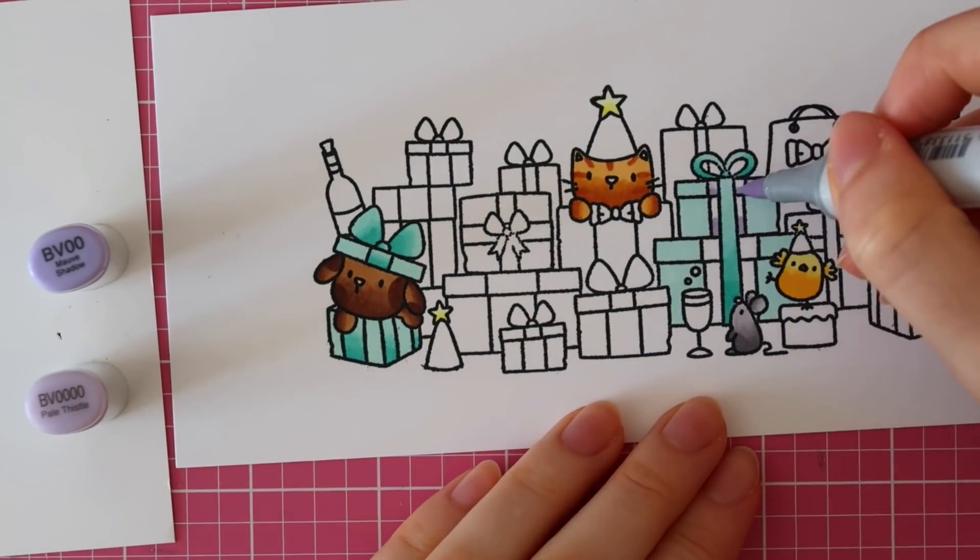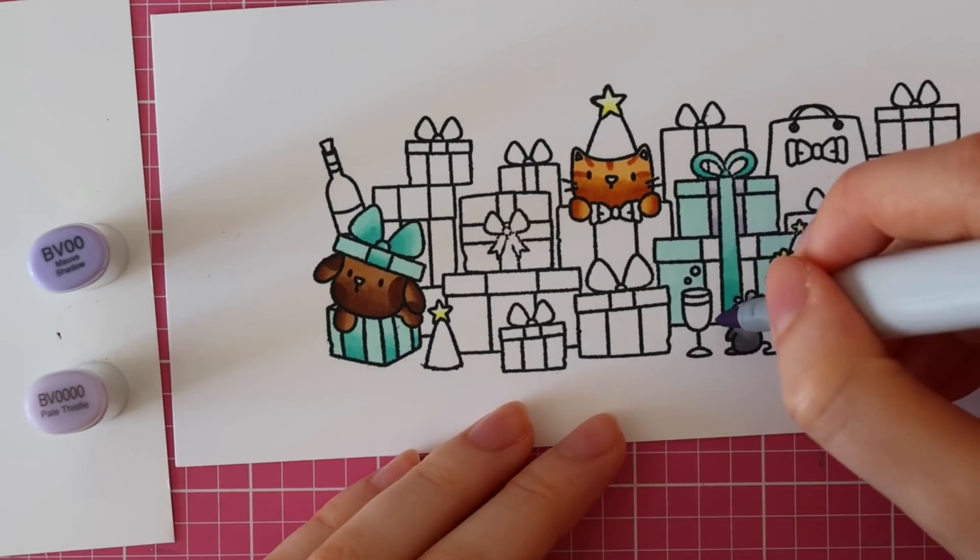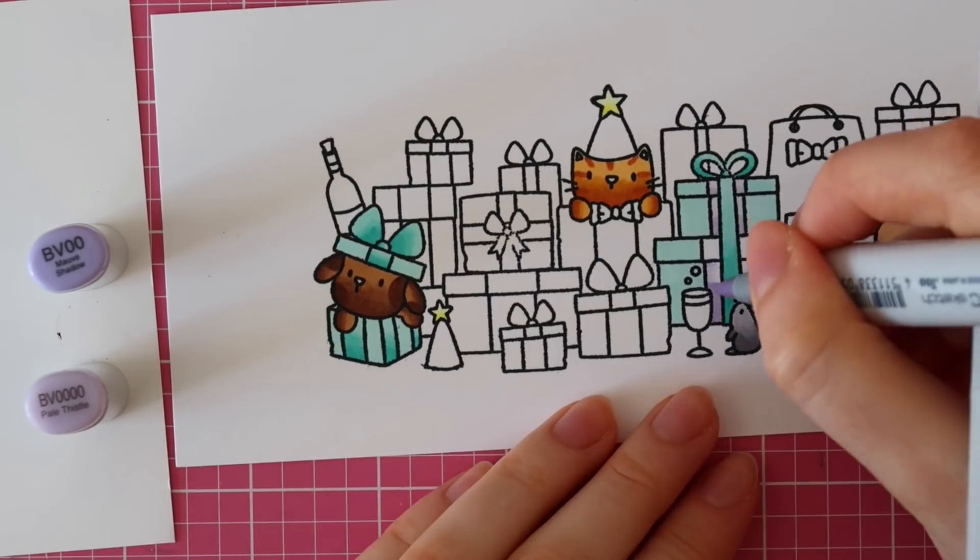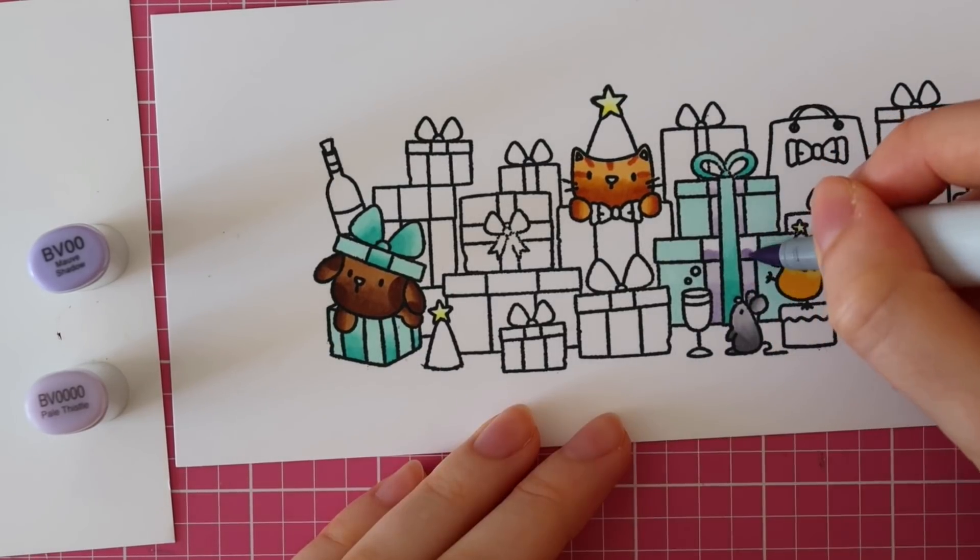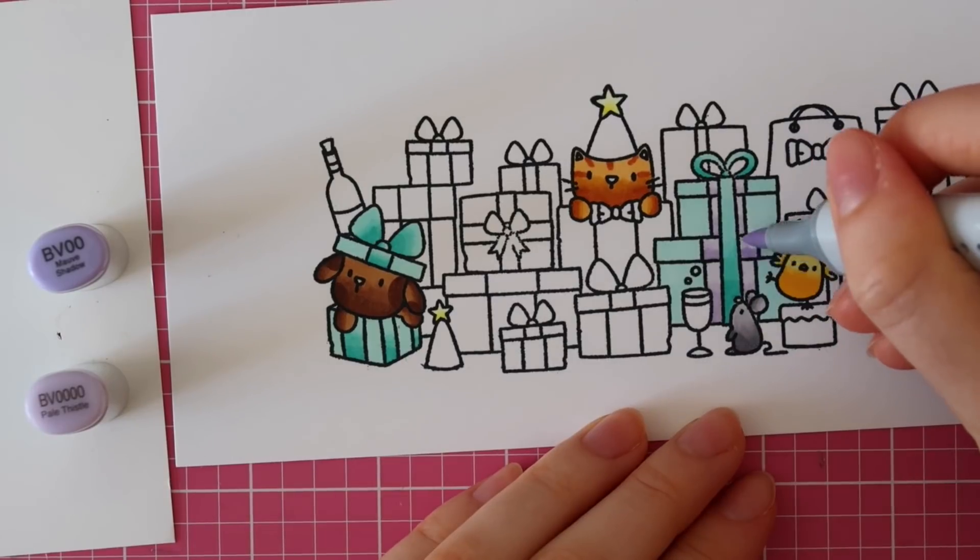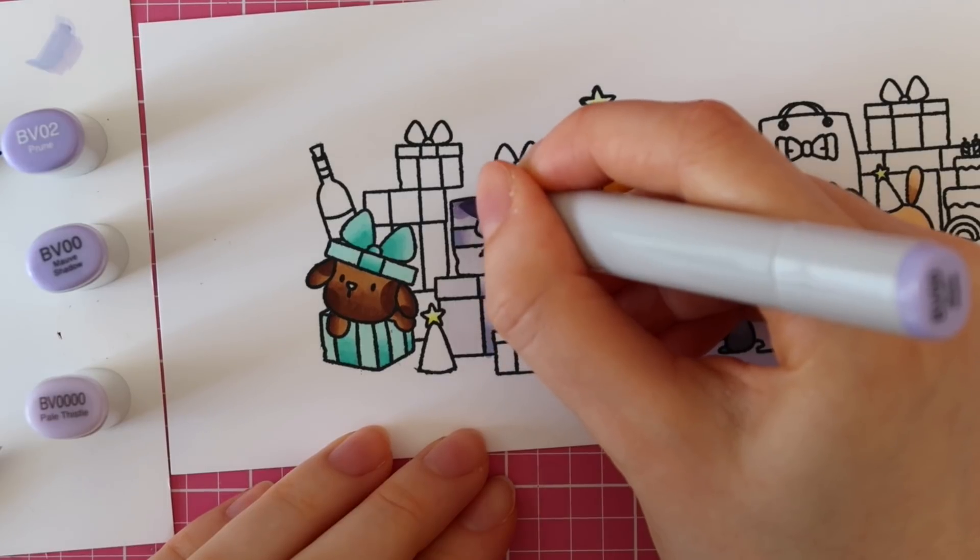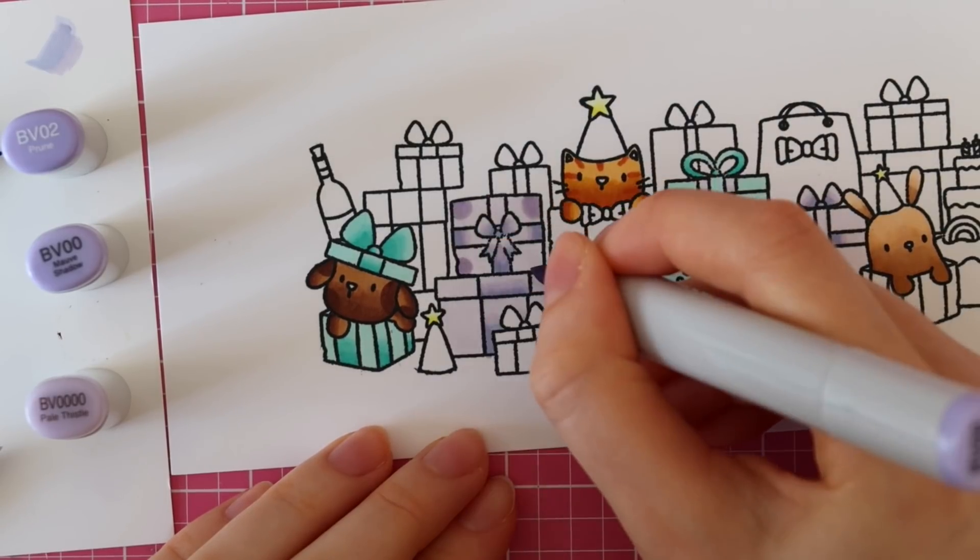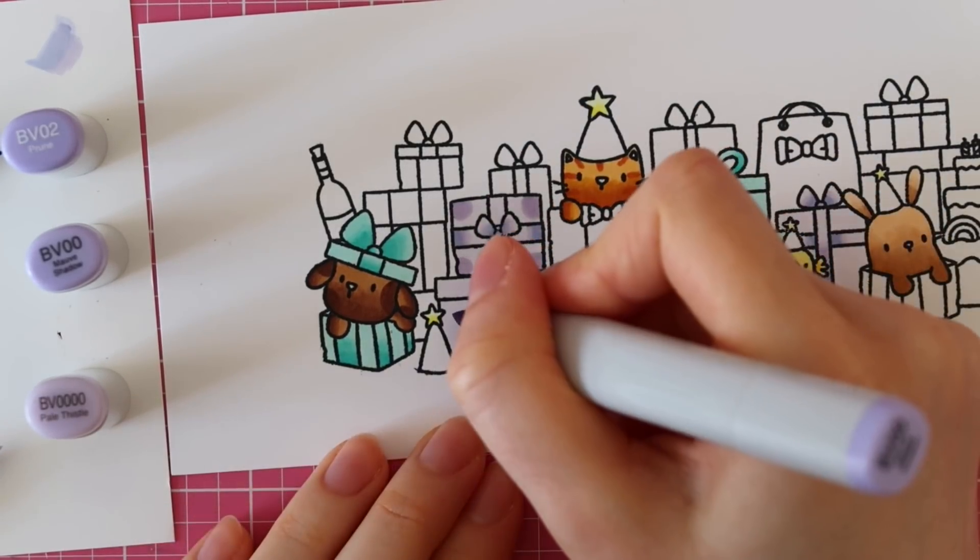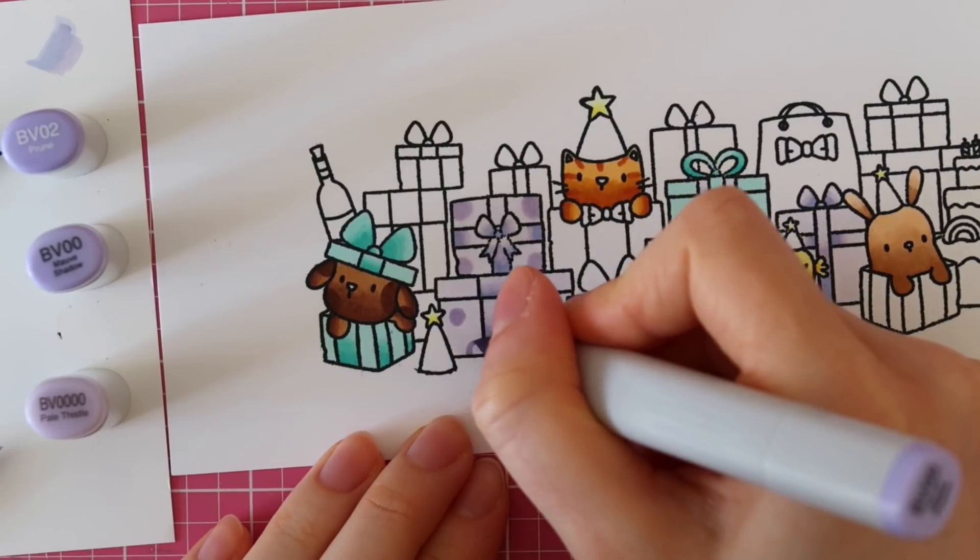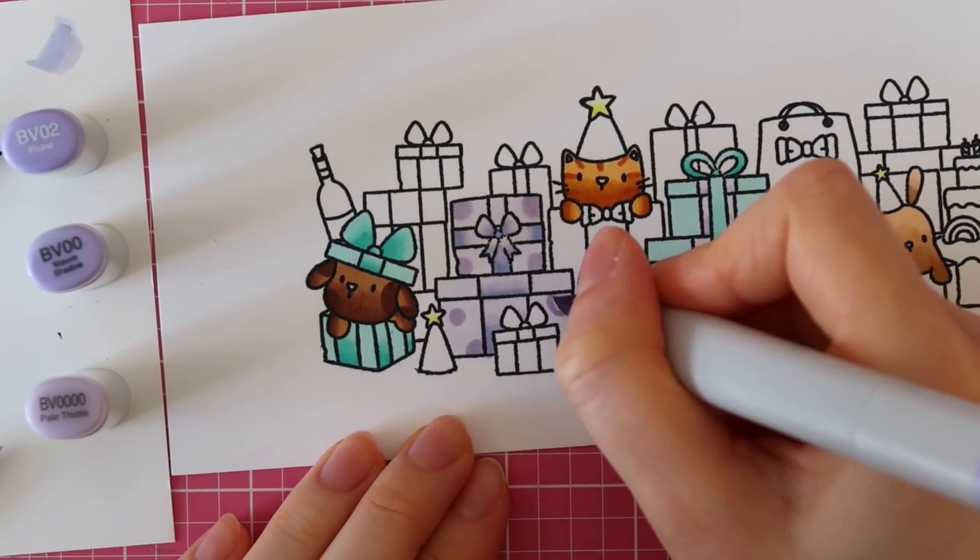So I just wanted to mention that I want to create a sequin shaker card using the stamp and the coordinating die. And I actually, I have never done that before. So when I start making this card, I pretty much had no idea what I was doing. I was just going with it.